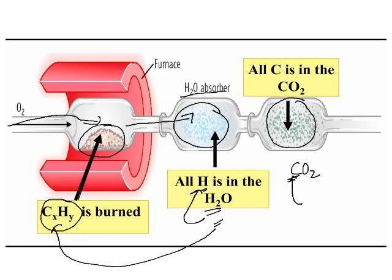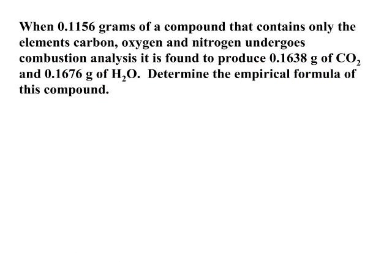You can use that information to find the empirical formula. So here's a typical problem. We've got 0.1156 grams of this compound. We know that the compound contains carbon, oxygen, and nitrogen. As it undergoes combustion, it is found to produce 0.1638 grams of carbon dioxide and 0.1676 grams of water. And now we want to determine the empirical formula for this compound that contains carbon, oxygen, and nitrogen.